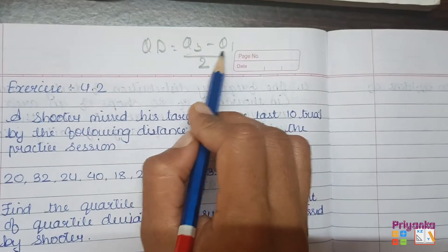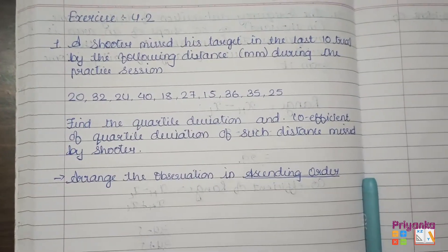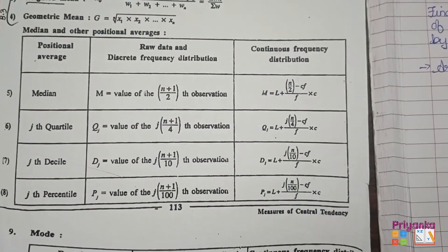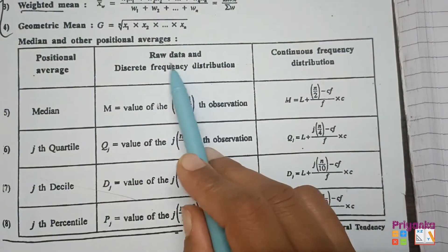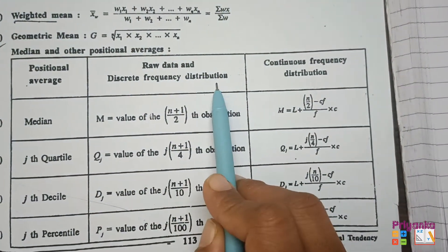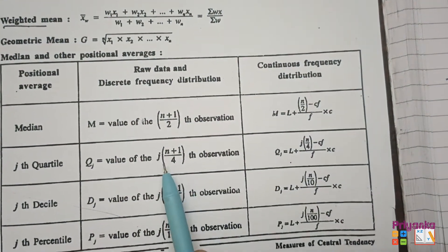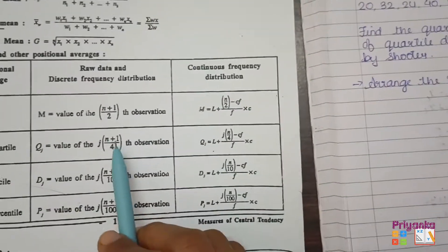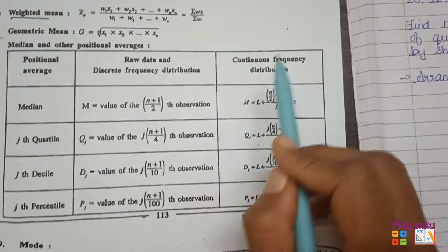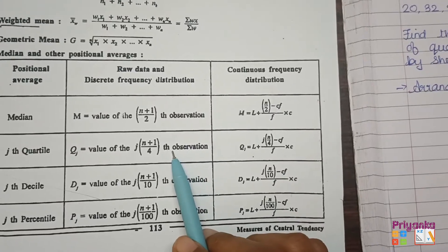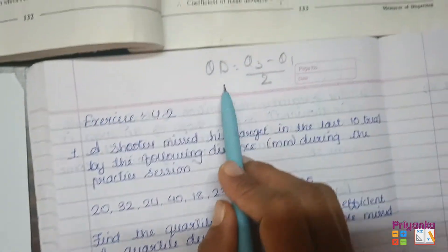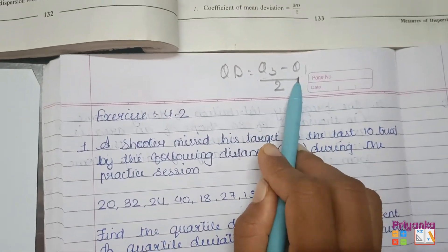From this raw data, we will first find out Q3 and Q1. Remember the formula from the last chapter — for raw data and discrete frequency distribution we use this formula. For discontinuous frequency distribution, we will take the bigger formula. For quartile deviation we need both Q3 and Q1.